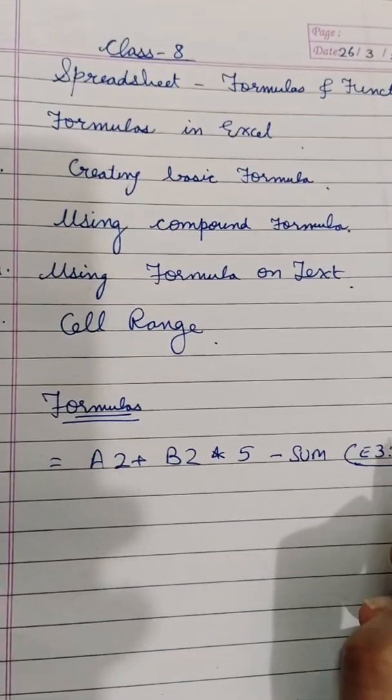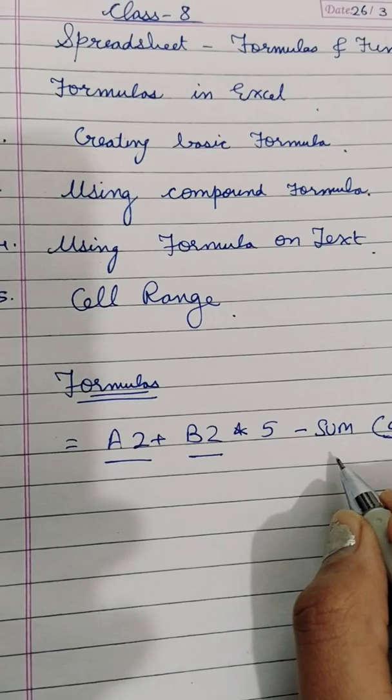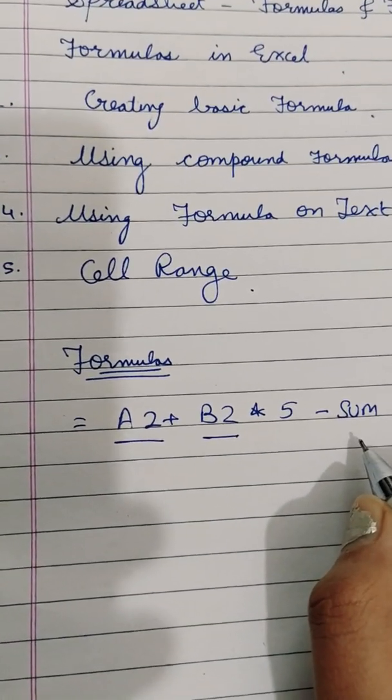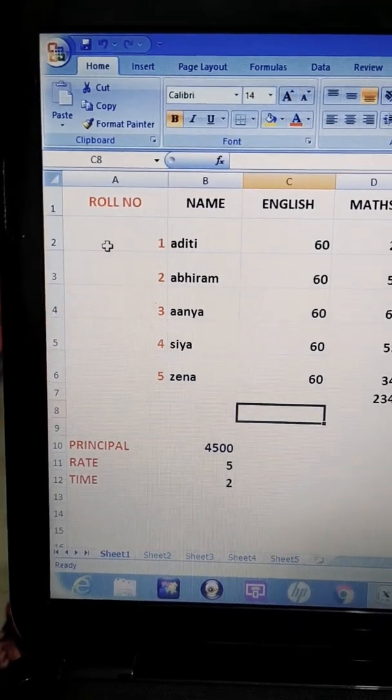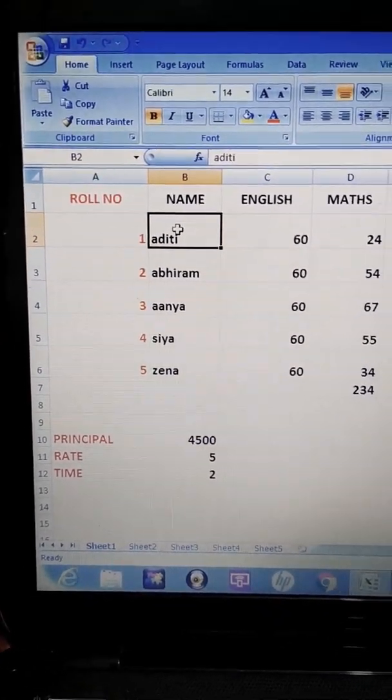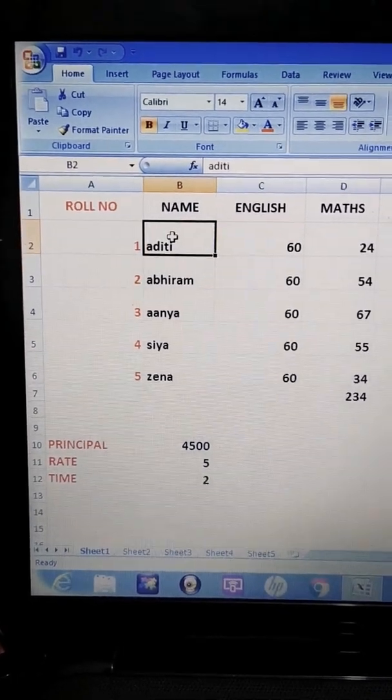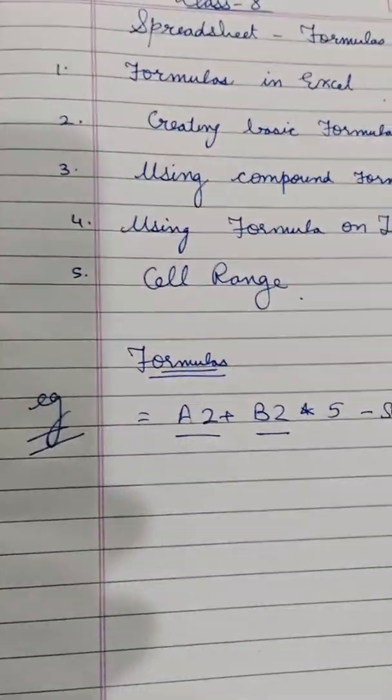Formulas include cell addresses. Like I have included A2, B2, these are cell addresses. Here A2, if we see what is there in A2? One. What is there in B2? Aditi. This thing you have already done in previous class. You know how to write cell addresses.